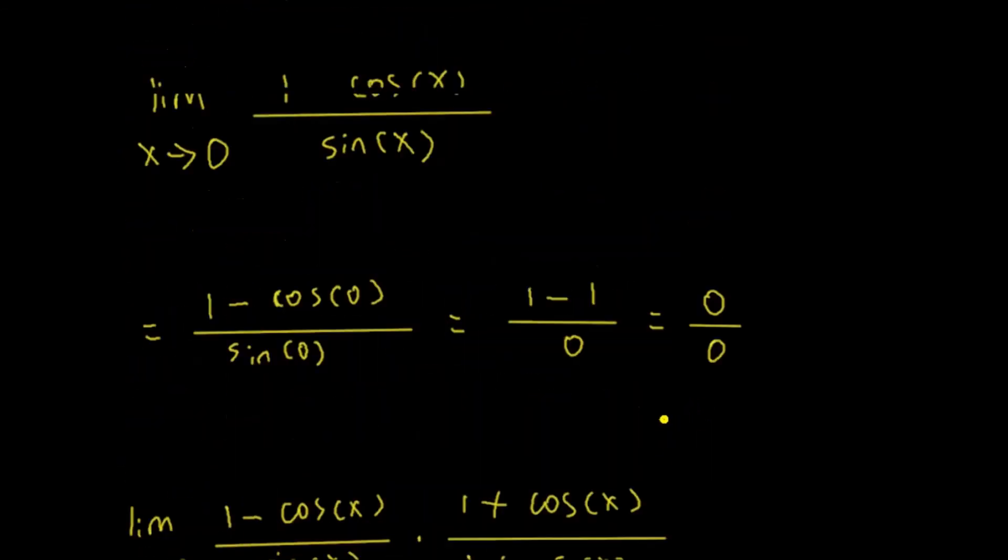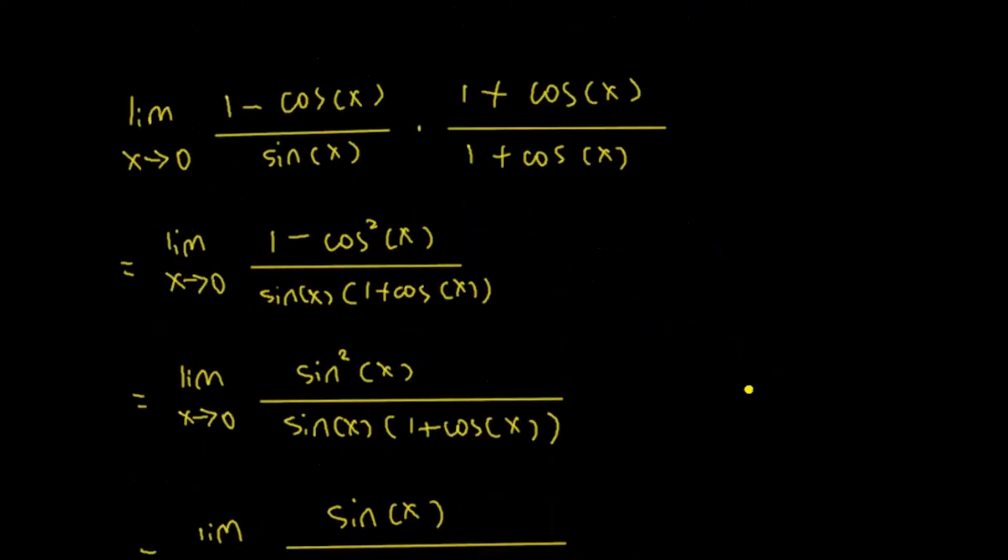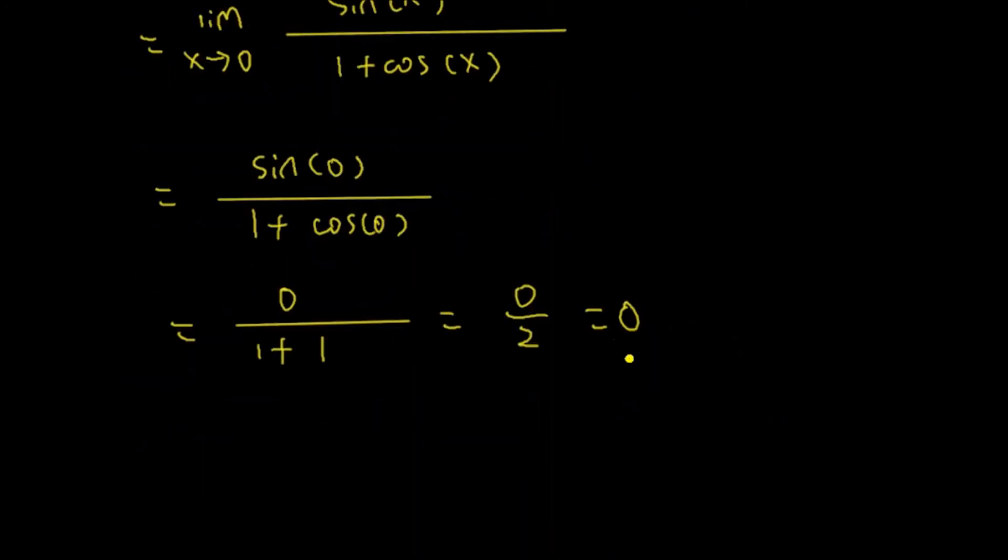Now, how about this? Looking at this, at the beginning, I put 0 into x here and we get 0 over 0, which is an indeterminate form. That means we can also use L'Hôpital's rule to evaluate this limit. Let's see if we also get 0 here. So this time, I will use L'Hôpital's rule.